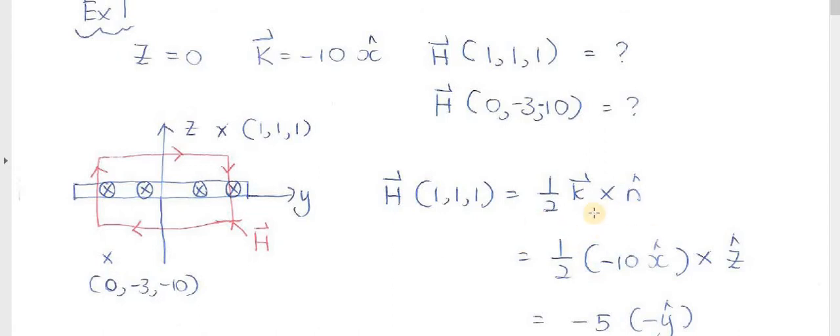So if we use the equations, this is the equation, we put the current density here, negative 10x, and this is the unit vector normal, pointing from the plane toward the observation point.